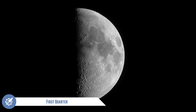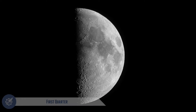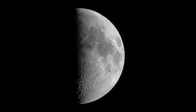The first quarter. During the first quarter, half of the moon is visible, and this is usually for the first half of the evening. Then it eventually goes down, leaving the sky very dark.